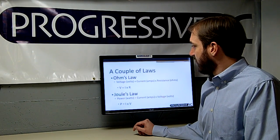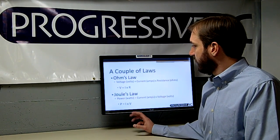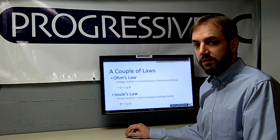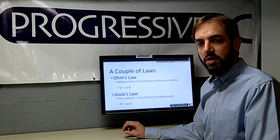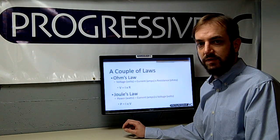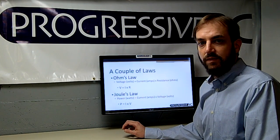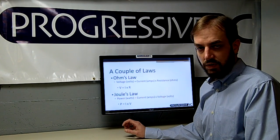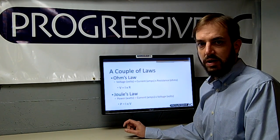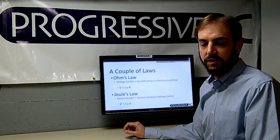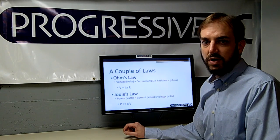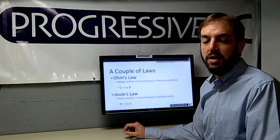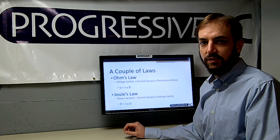Moving into a couple of laws, we'll introduce Ohm's law first, which states that voltage is equal to current times resistance — where voltage is measured in volts, current in amps, and resistance in ohms. This is often expressed as V equals I times R, where I stands for current.